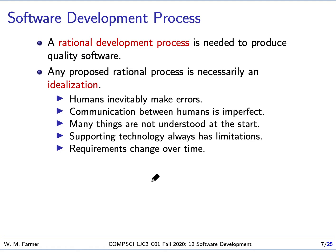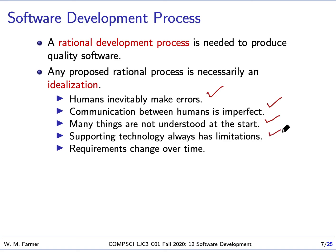This rational process is necessarily an idealization, because of the following problems: humans will make errors — what we want to do is reduce and catch them; communication between humans is imperfect, which is a huge problem; when you start a project, there are almost always many things not understood at the start; the technology we use to develop applications has limitations; and finally, requirements change over time — meaning a product that meets today's requirements may be inadequate in a year.